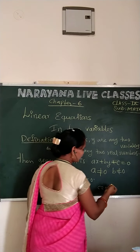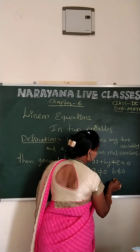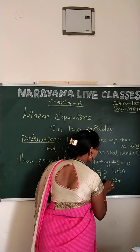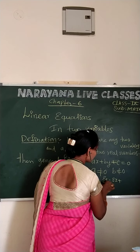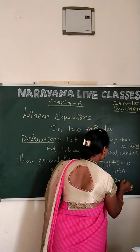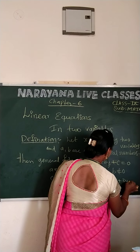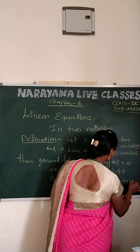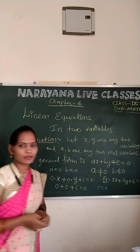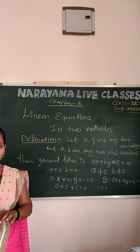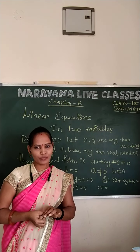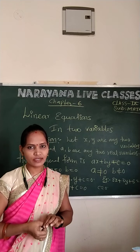So this is the general form of a linear equation in two variables. For example: two X plus three Y plus five is equal to zero. This is one example of a linear equation in two variables. I hope you understood. Thank you.